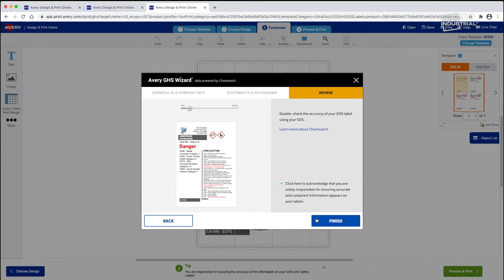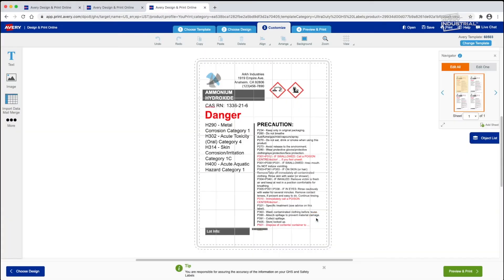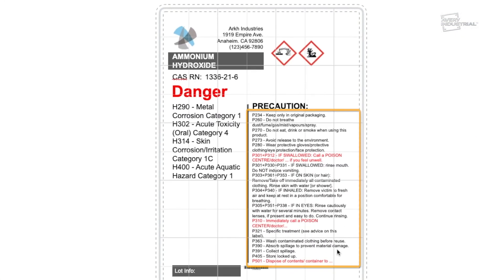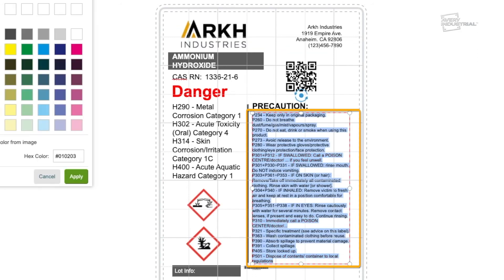You're now in the editing canvas, where you can customize the label to meet your needs. First, update any of the red statements based on your specific situation. When finished, change the font back to black.